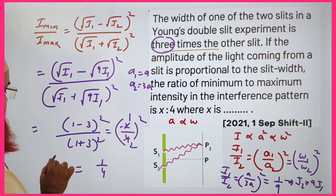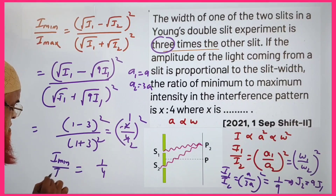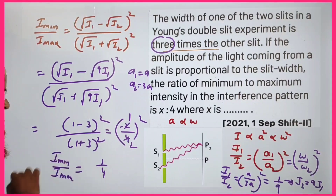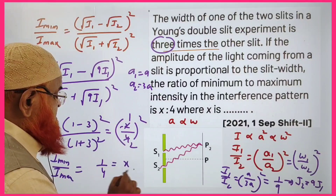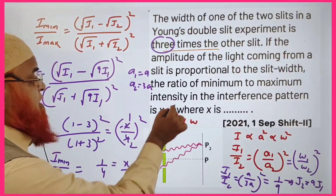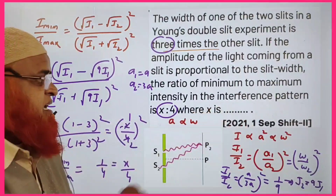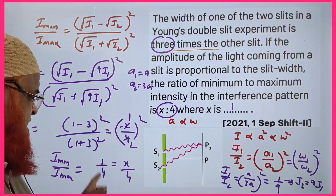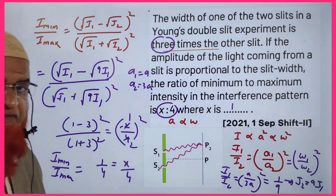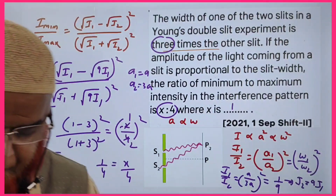So I_min to I_max is 1:4. The question states this ratio is x:4, so the value of x is 1.